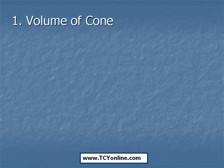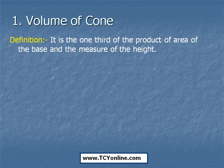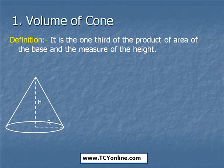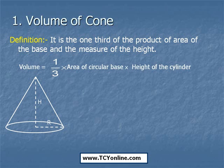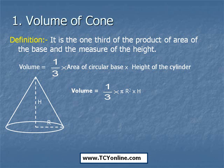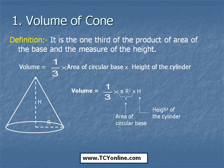Let's first look at the volume of a cone. Volume of a cone is basically one-third of the product of the area of its base and its height. That means the volume of a cone is simply 1/3 times the area of the circular base times the height, which can be written as 1/3 × π r² × h, where π r² is the area of the circular base and h is the height.